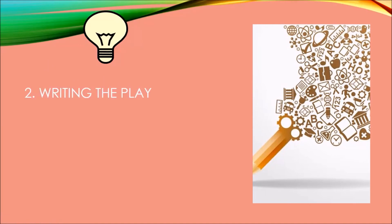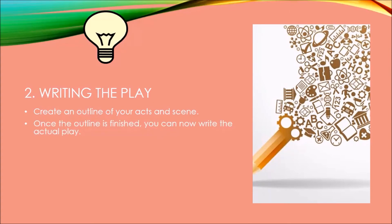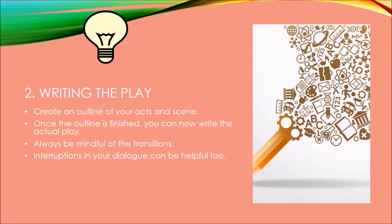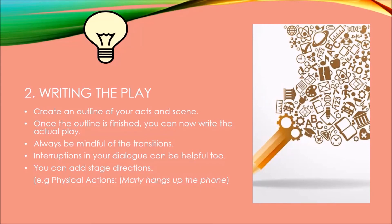Now let's go to writing the play. You first have to create an outline of your acts and scenes. Once the outline is finished, you can write the actual play. Always be mindful of the transitions or intermissions. Interruptions in your dialogue can be helpful too, as they can appear as actual day-to-day conversations between people. You can add stage directions — for example, physical actions like 'slowly hangs up the phone.' Then rewrite your draft as much as you want.